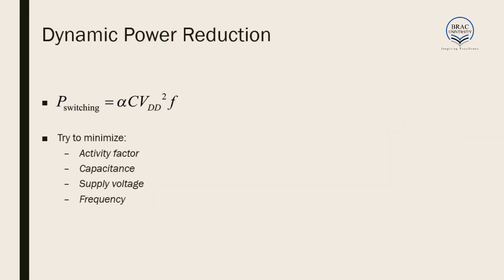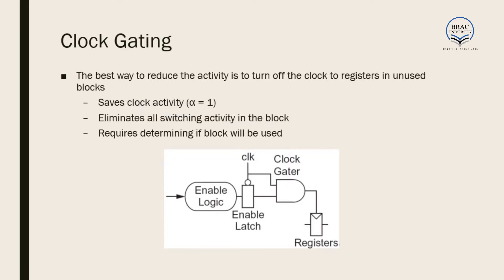Dynamic power is the switching loss, and we want to minimize it. There are four components: activity factor α, capacitance C, supply voltage VDD, and frequency F. By minimizing any of these, we can reduce the switching power.